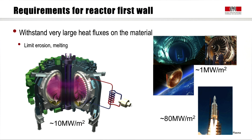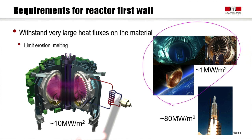What object can we compare that to? Objects normally subject to power fluxes of the order of 1 MW per square meter — much less than the fusion reactor — include a fission reactor, a large turbine, and a spacecraft re-entering the atmosphere. At a different order of magnitude, even more difficult, are surfaces exposed to fluxes of the order of 80 MW per square meter when a rocket departs.